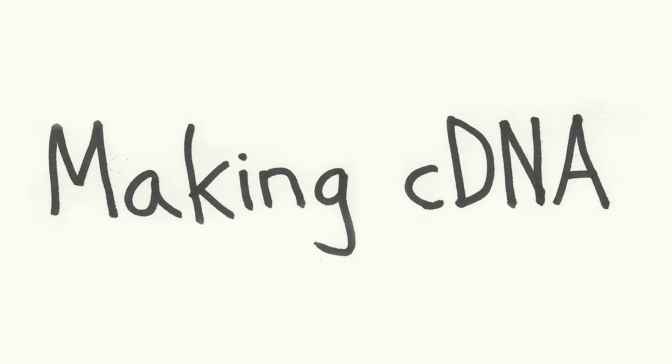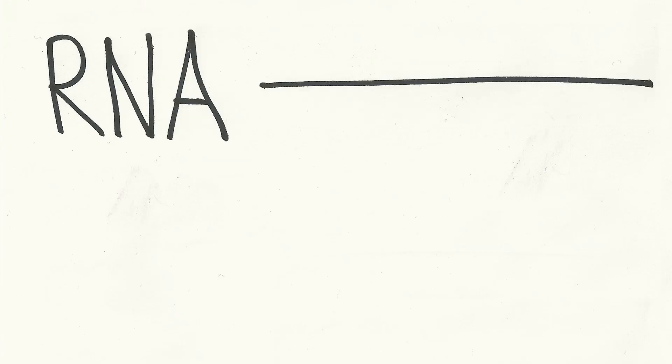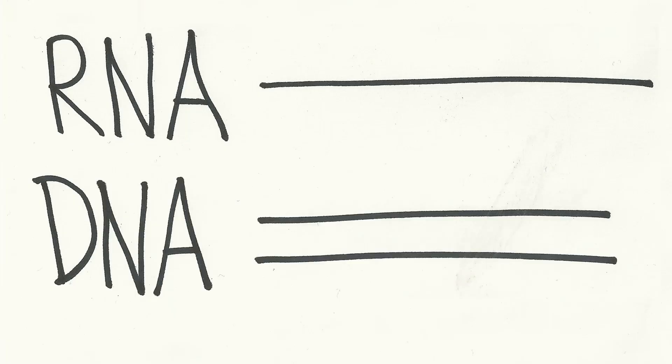Next, we turn the RNA into cDNA, which makes the sample more stable. RNA is single-stranded and has a very short life. DNA is double-stranded, so it holds up better in nature.